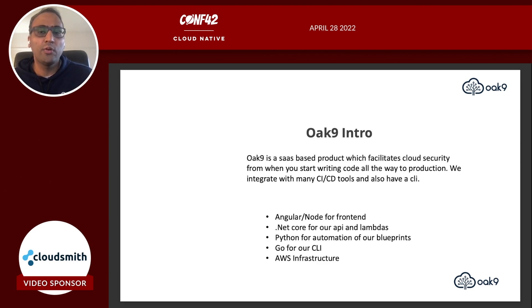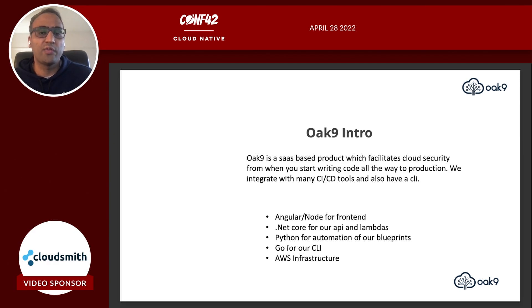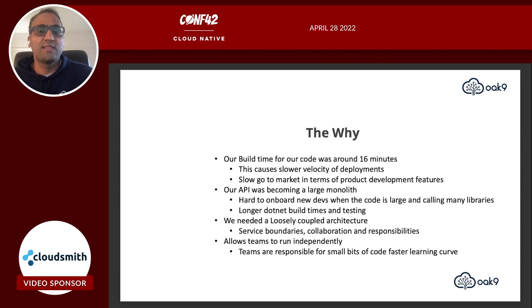Angular and Node for our front-end, .NET Core for our API and Lambdas, Python for automation for our security blueprints, Go for our CLI binary, and the majority of our infrastructure is in AWS.